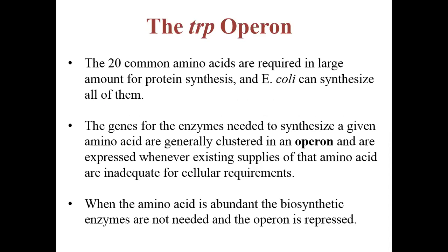Today in this class I am going to discuss the tryptophan operon and how the tryptophan biosynthetic genes are regulated. Among the 20 common amino acids, tryptophan is an essential amino acid. All 20 amino acids are required for protein synthesis, and E. coli synthesizes all of them. Tryptophan, being an essential amino acid, is very important for its synthesis in E. coli.